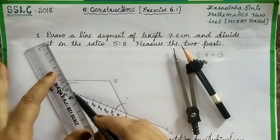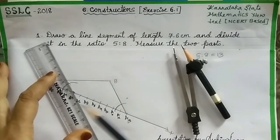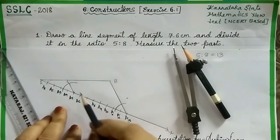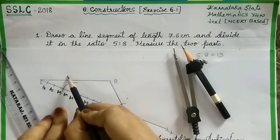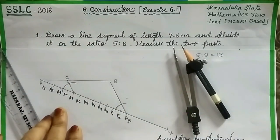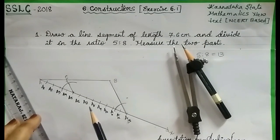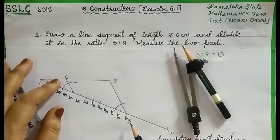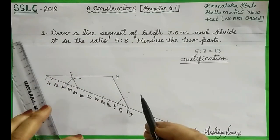Now from point A5, draw a line which is passing through this intersecting arc. Let this point be C. Then we got here A5C line which is parallel to A13B.